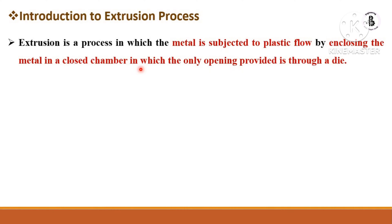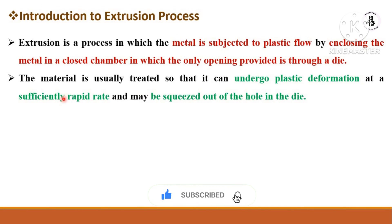The extrusion process is considered as a plastic deformation of material, in which the metal is subjected to plastic flow by enclosing it into a closed chamber. The metal then passes through the opening of a die, and whatever cross-section the die has, that kind of metal strip is formed. The material is treated so it can undergo plastic deformation at a sufficiently rapid rate and is squeezed out through the die opening.